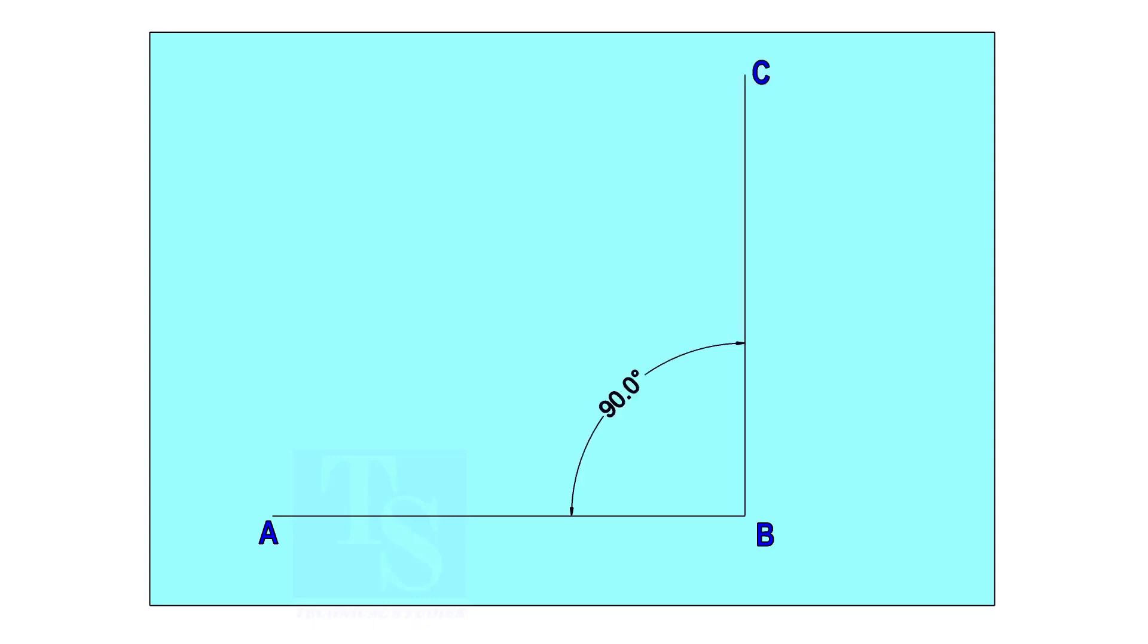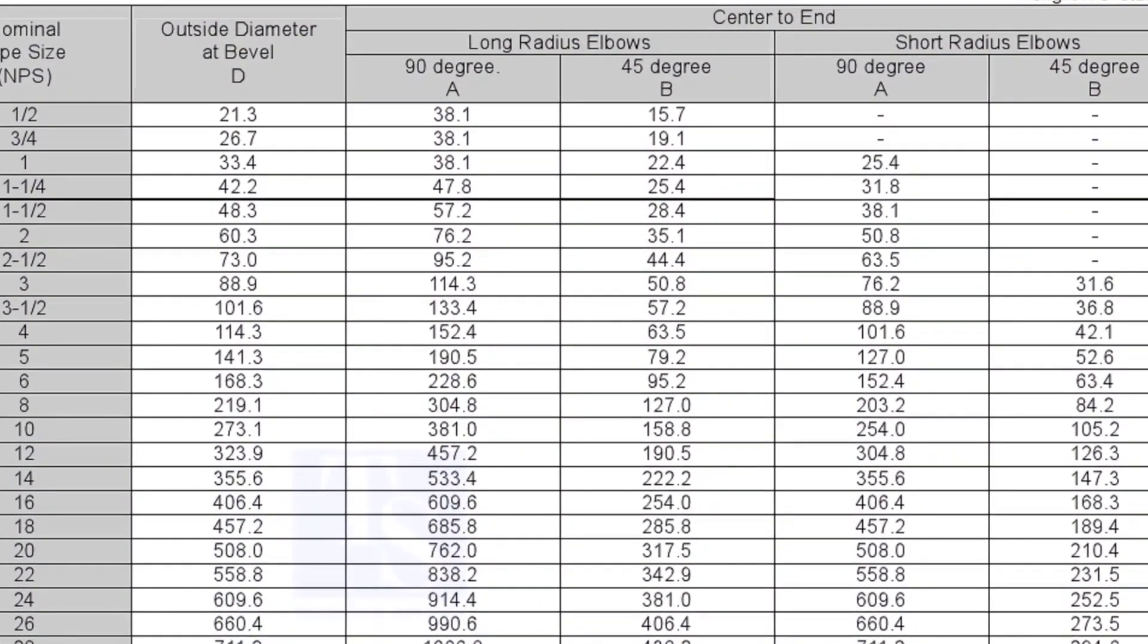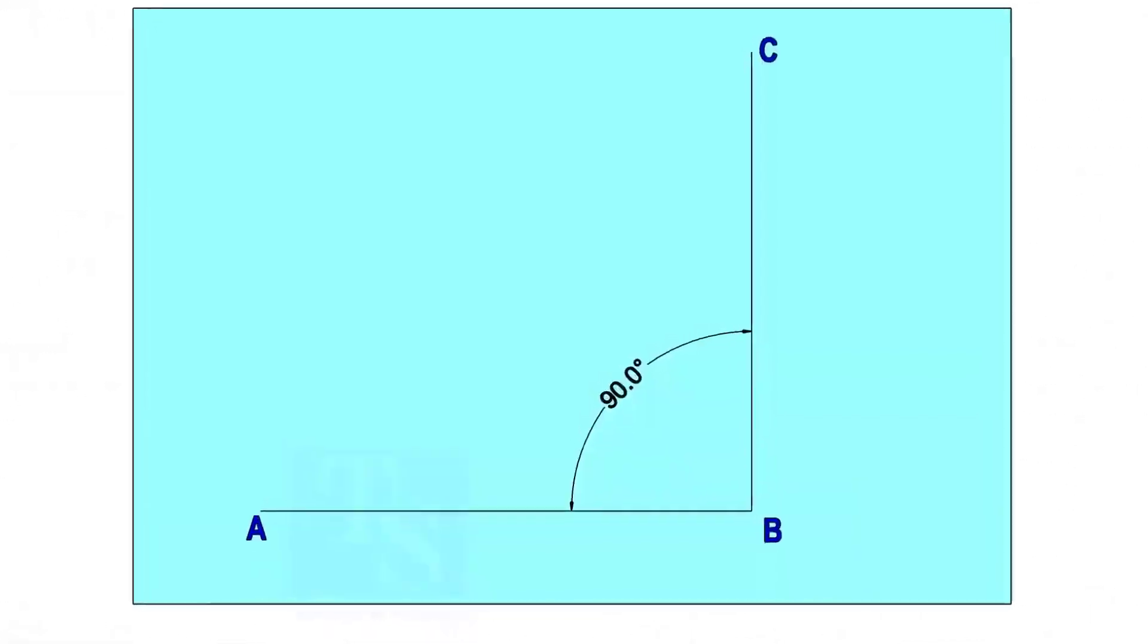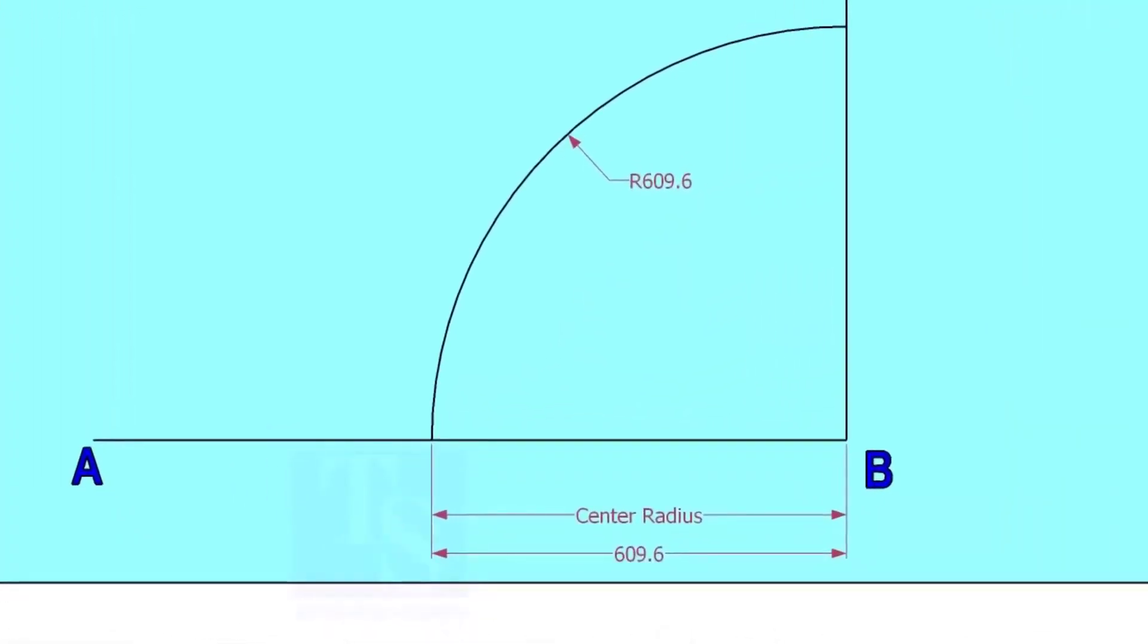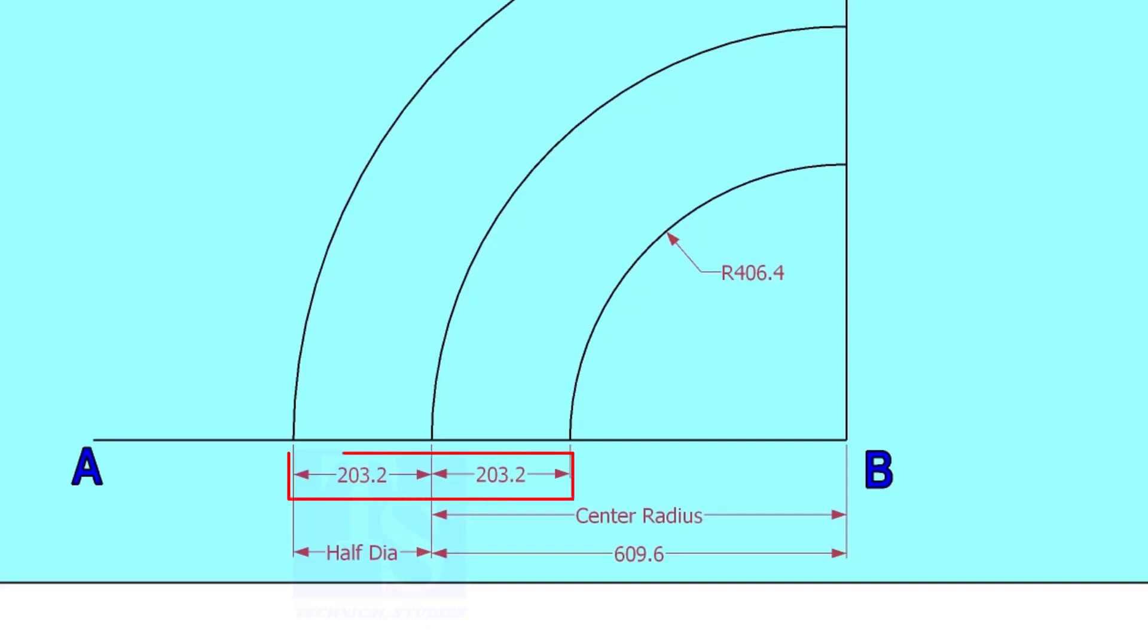Mark line AB and a perpendicular line BC. Let us check the center radius of 16-inch long radius elbow. Draw an arc with the center radius 609.6 millimeters. Mark the half OD arcs on both sides of the center line.